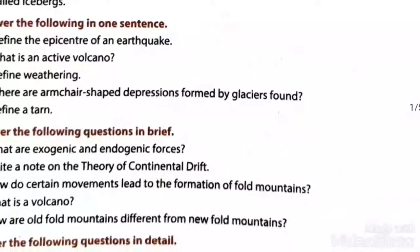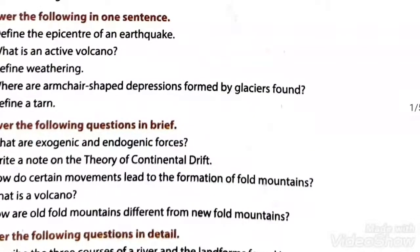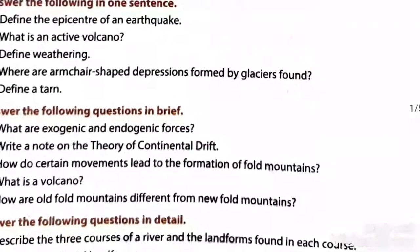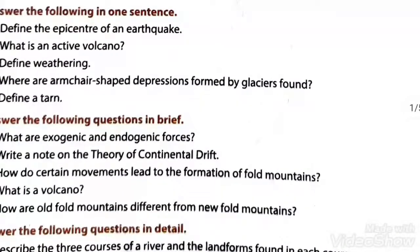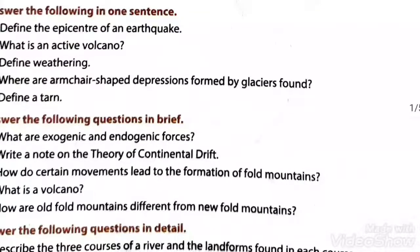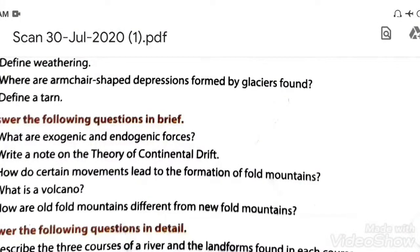An active volcano is one that has shown signs of instability and erupts frequently, or has had an eruption in recent times. Weathering is defined as the gradual process by which rocks break up and decay due to atmospheric conditions. The changes and break-up that occur in rocks due to atmospheric conditions is called weathering.